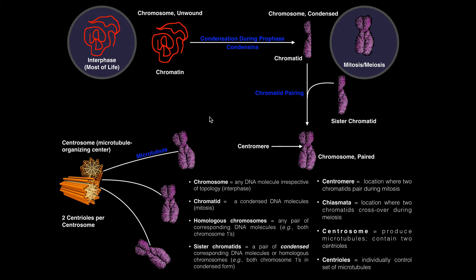To really understand some of this you need to know a little bit of the basics of the cell cycle. Remember that there are two major phases: interphase, where most cells spend most of their life, and then mitosis or meiosis, where the cell is actually dividing. This is where the cell spends a very minor portion of its life — a very small percentage — but most of it is in interphase.